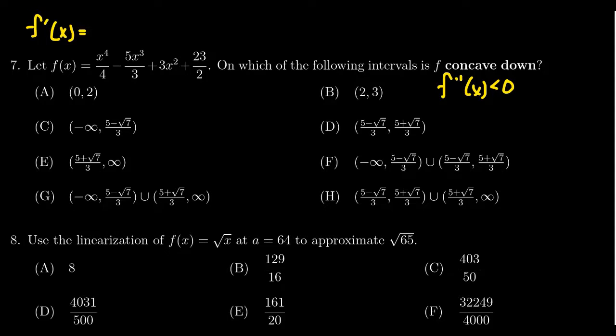We first compute the first derivative. By the usual power rule, we're going to get x^3 - 5x^2 + 6x. The derivative of 23/2, since it's a constant, is zero. We can see the fractions have all disappeared.